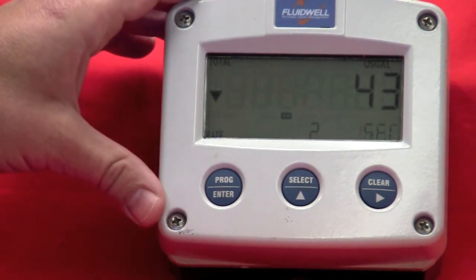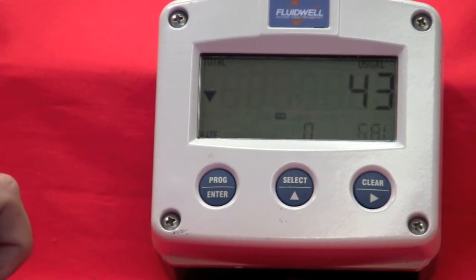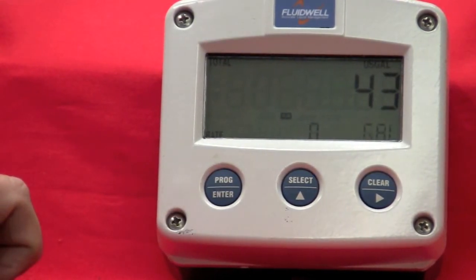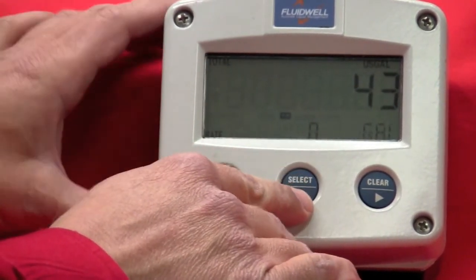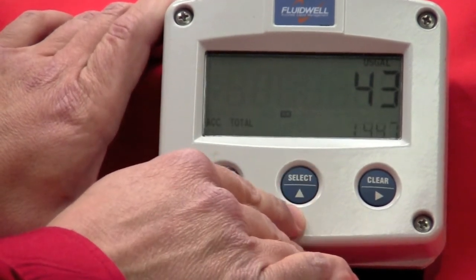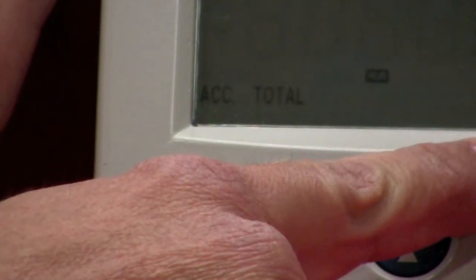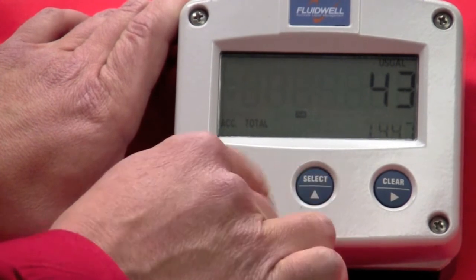This is a NEMA 4X aluminum enclosure for the demo. We have three push buttons here that we can utilize to set up the meter. The most basic function of the meter, you can use the select key, and it's important on how you push these buttons. You want to just push and release. If I push it just once, you'll see the accumulated grand total. This is a non-resettable totalizer.